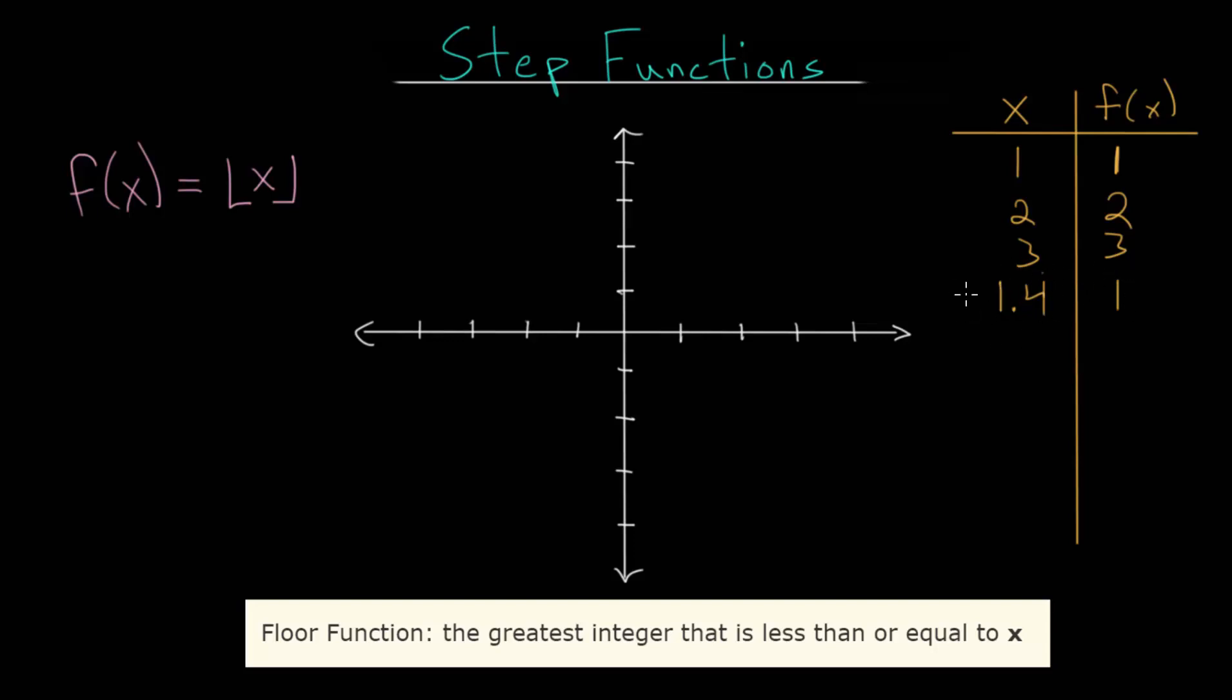Now recognize there are many, or in fact infinite, integers less than 1.4, like for instance 0, negative 1, negative 2, and so on. But we're looking for the greatest of those integers that's less than this, and that integer would be 1. So also, if we plugged in, let's say 1.67, the greatest integer that's less than this is also equal to 1.